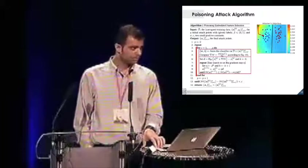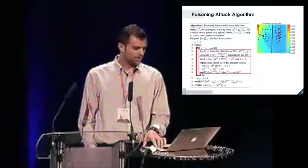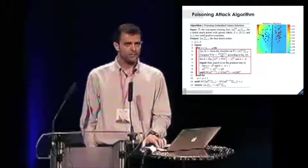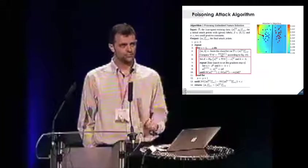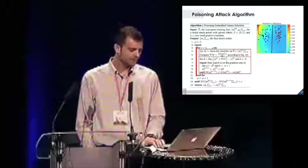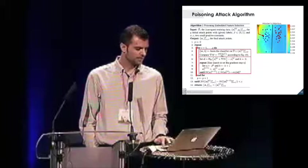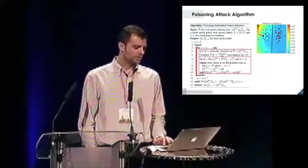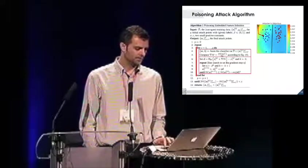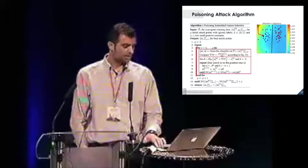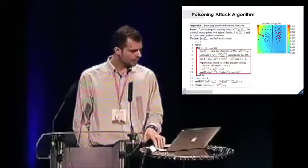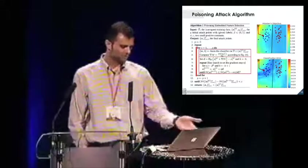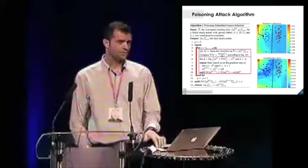So here is a simple 2D example, where the goal is to separate the blue and the red points. In the background, in colors, we report the attacker's objective function. This is computed essentially by adding a red point in each location of the feature space and updating the model. So this is how the function looks like. If we initialize the attack point here, so like this big red dot in the middle of the blue class, then you can appreciate how the point follows the gradient of the objective function up to a local maximum. Just to show that this is a good approximation of the classification error, we also report the classification error. You can see that the attack point eventually finds a maximum of the classification error too.